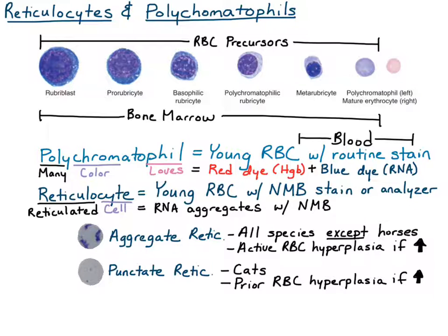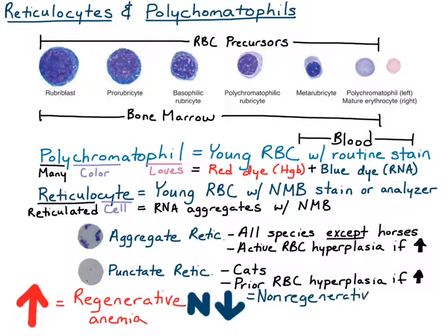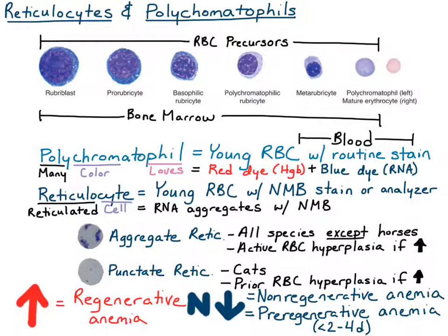When evaluating reticulocytes, there are two concentrations you'll see on the CBC: the percent reticulocyte count and the absolute reticulocyte count. We always evaluate reticulocyte numbers by the absolute reticulocyte count. If reticulocytes are increased, we say the patient has regeneration, and in the presence of anemia that's called a regenerative anemia. If reticulocytes are normal or decreased, it's a non-regenerative anemia, or it could be an impending or pre-regenerative anemia within two to four days of the onset of anemia, meaning it will be regenerative in the next two to four days.